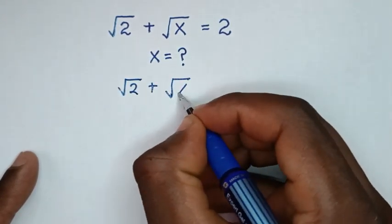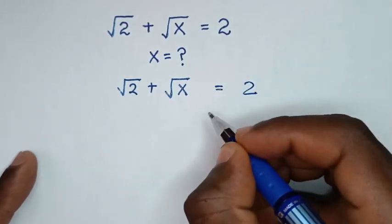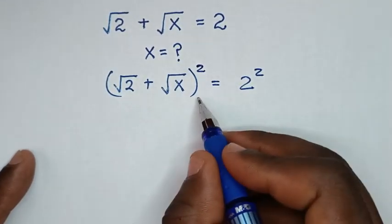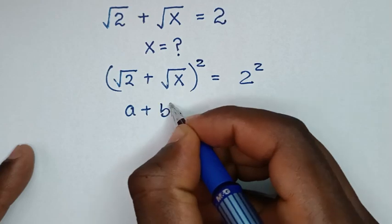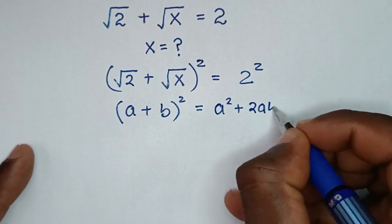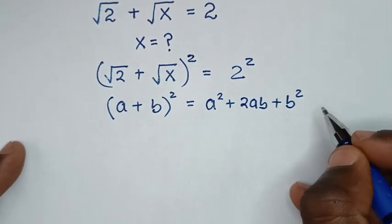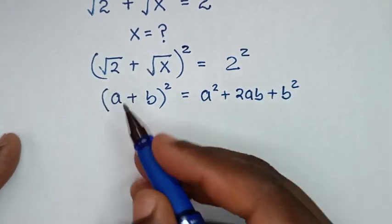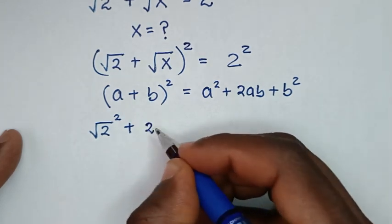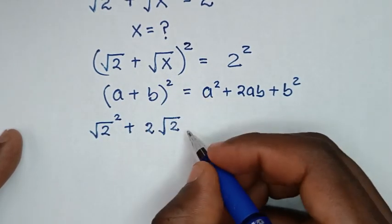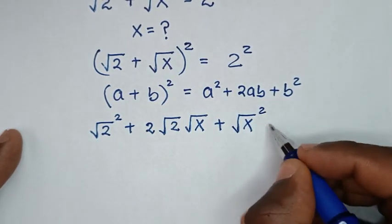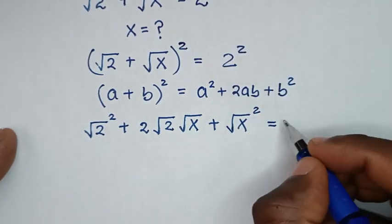From our problem, square root of 2 plus square root of x is equal to 2. In the first step we start by squaring both sides. This side is in the form of the rule (a + b)² = a² + 2ab + b². Applying this: (√2)² + 2·√2·√x + (√x)² = 2² = 4.